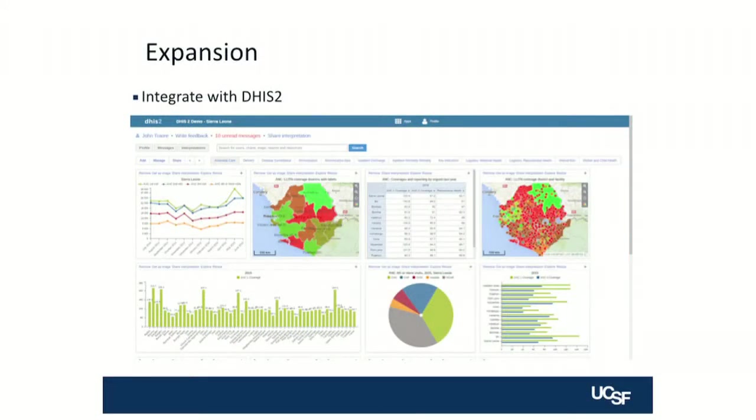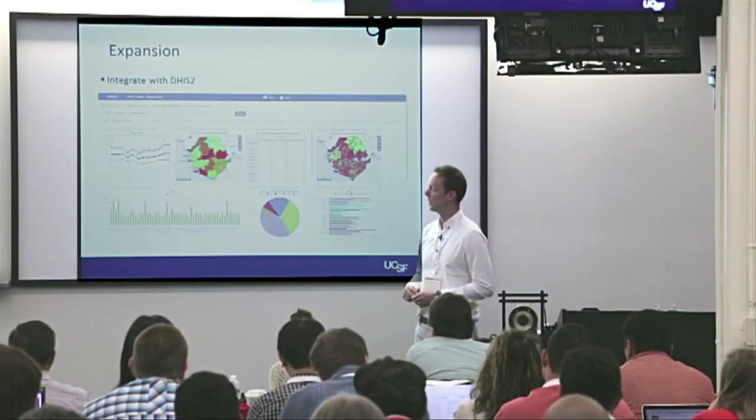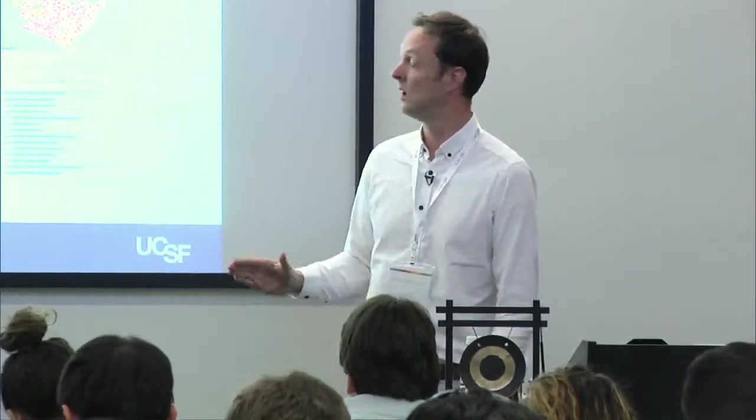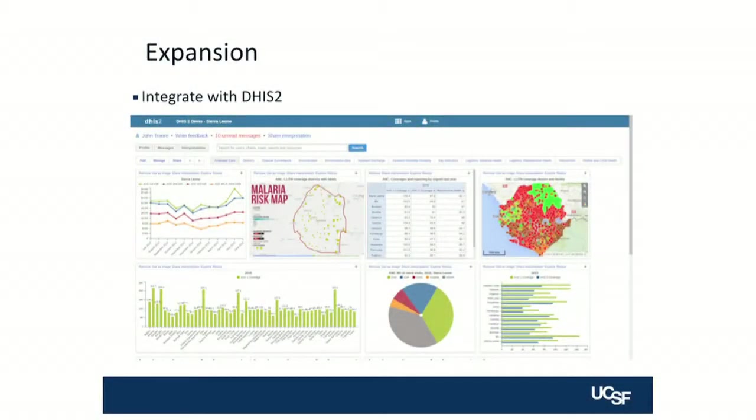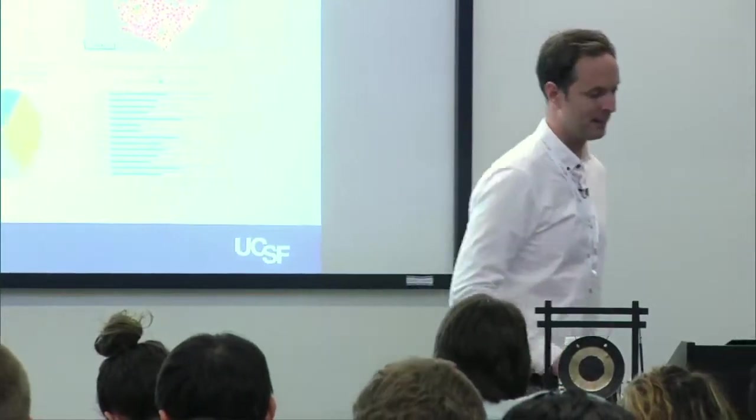We also want to work out how this platform, how this technology plugs into other bits of technology. There's an open source software called DHIS2, and there's some representation from DHIS2 here today. DHIS2 is open source software used to aggregate, manage, and visualize disease surveillance data, now used in a number of countries. So the question is: can our risk mapping platform essentially plug into DHIS2?